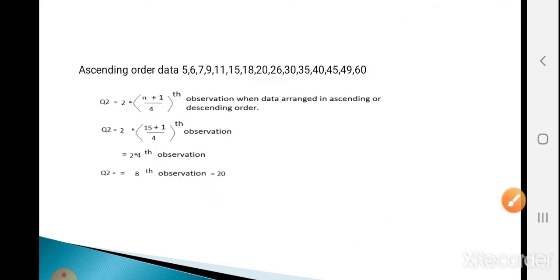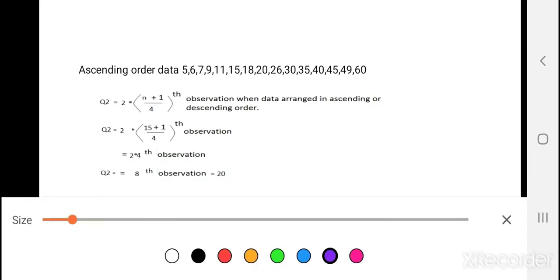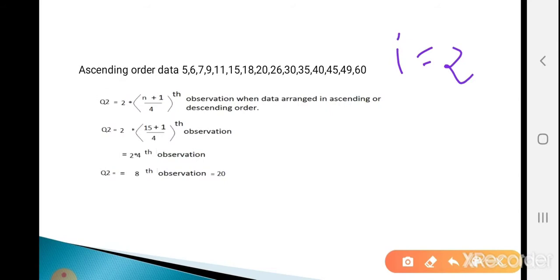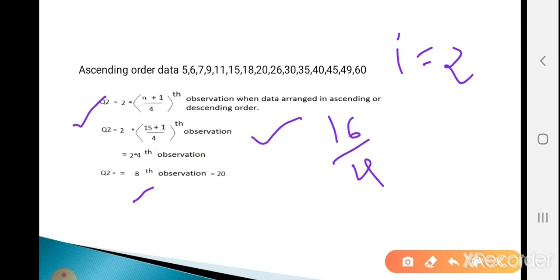Now calculate Q2. For Q2, put i equal to 2. So Q2 equals 2 times (15+1)/4 = 2 times 4 = 8th observation. The 8th observation in the ascending order data is 20. So Q2 equals 20.